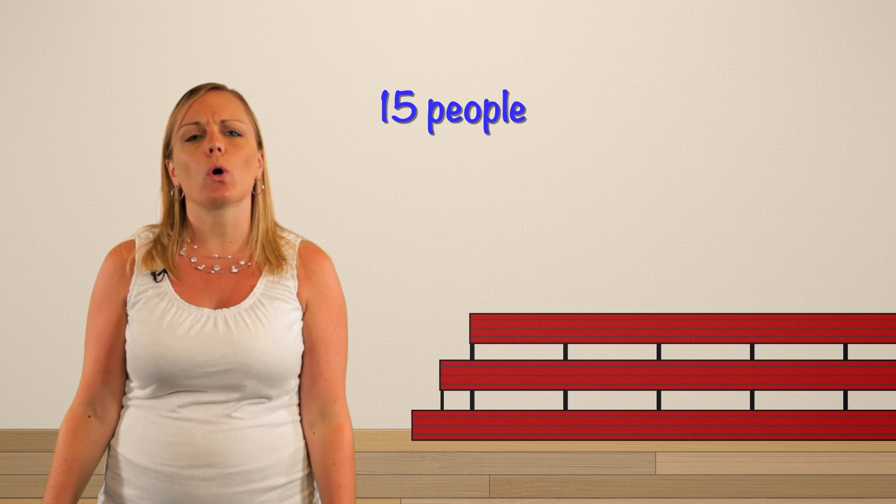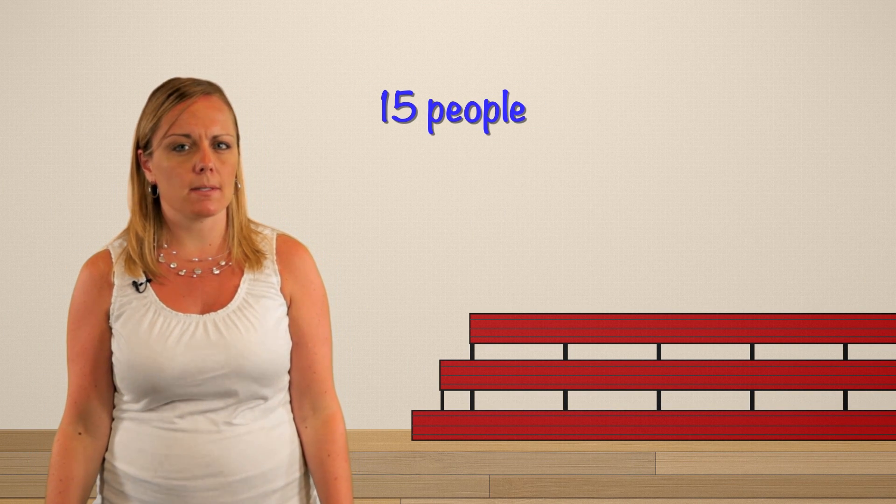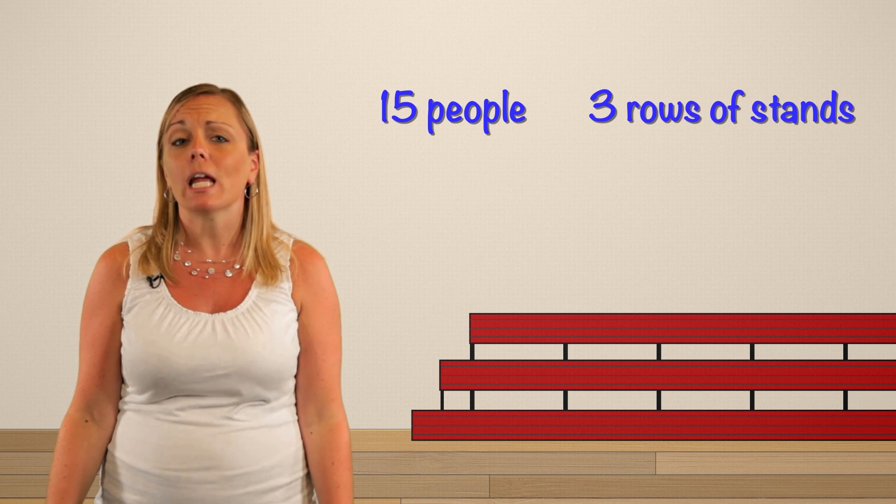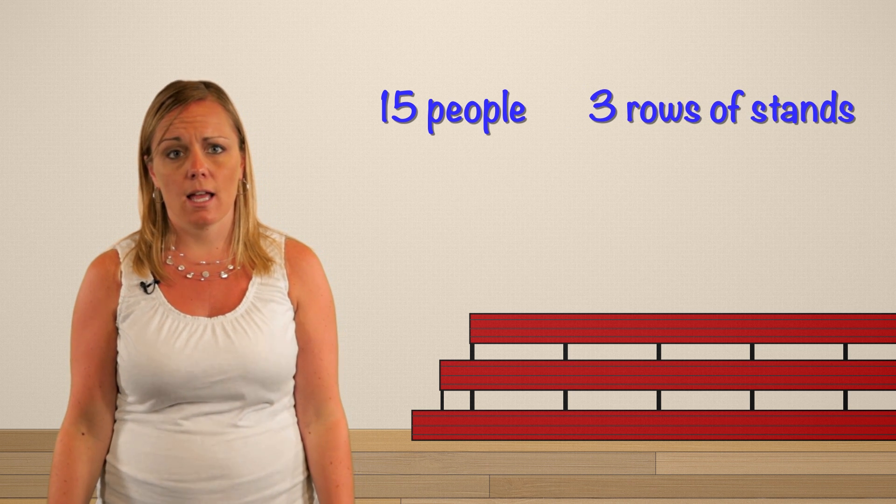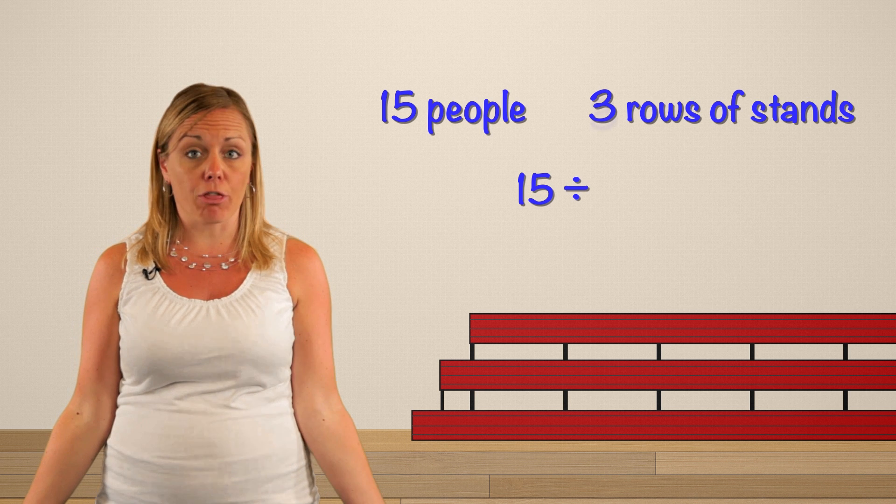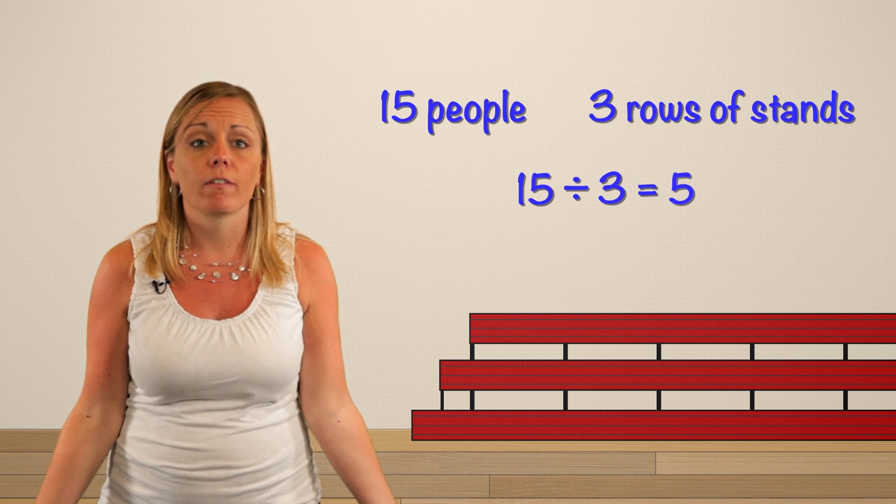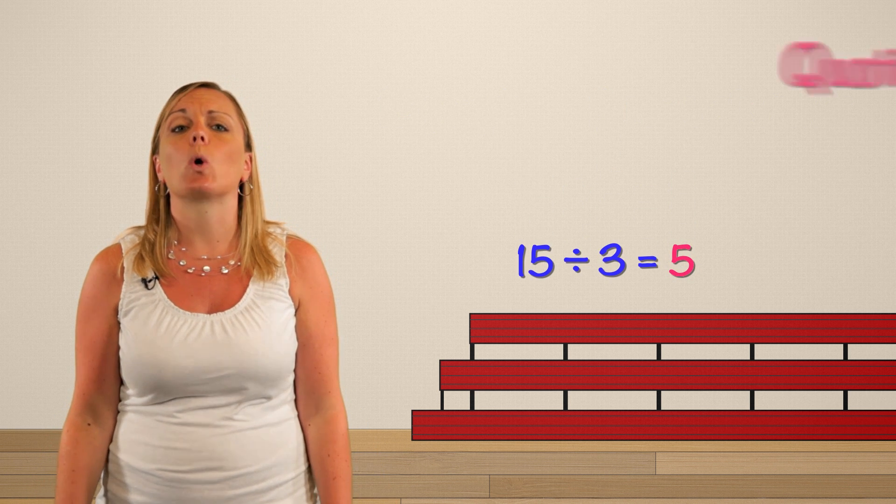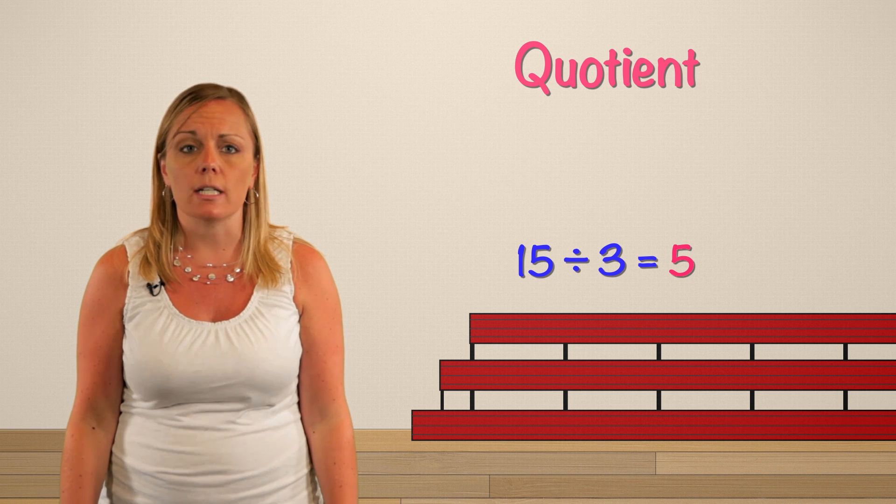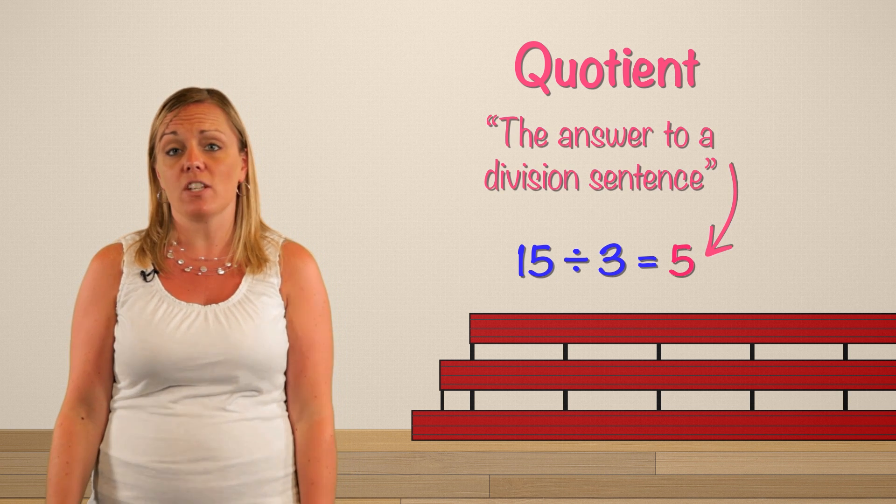Now let's take a look at the stands. 15 total people came to watch the games and there are three rows of stands. That's 15 divided by three equals five. This five here is the quotient. Quotient means the answer in a division sentence.